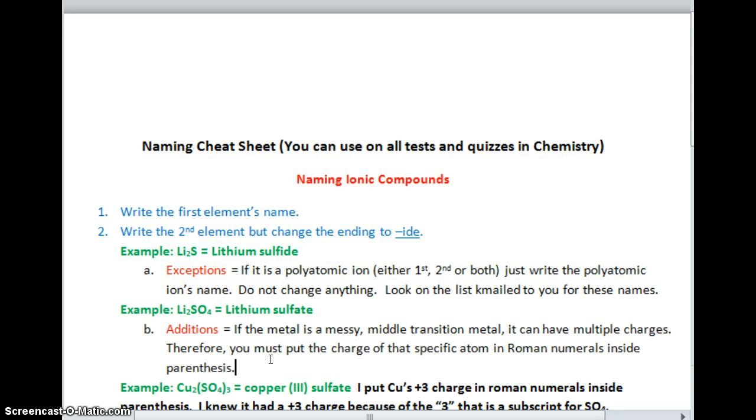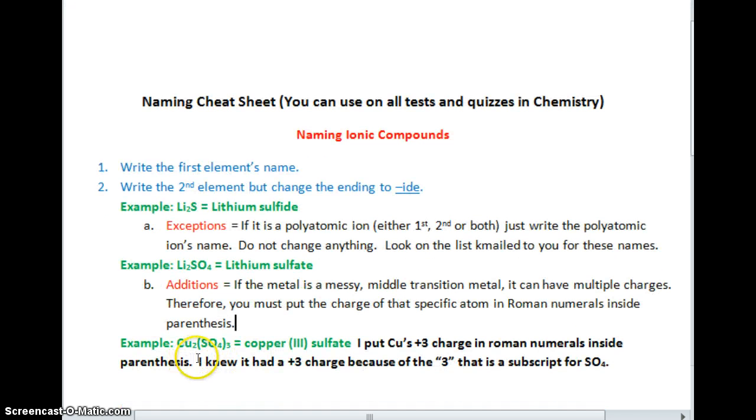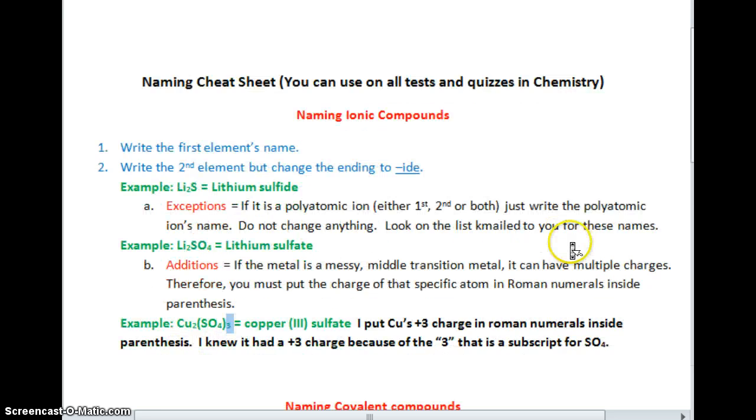Addition: if the metal is a messy middle transition metal, it can have multiple charges. Therefore, you must put the charge of that specific atom in Roman numerals inside parentheses. For example, copper sulfate is actually copper(III) sulfate. There's a 3 in the middle because this 3 came from copper's positive 3 charge. This 2 means there's two atoms of copper, but the 2 came from the sulfate's negative 2 charge. I put copper's plus 3 charge in Roman numerals inside the parentheses. I knew it had a plus 3 charge because of the 3 that is the subscript for SO4.